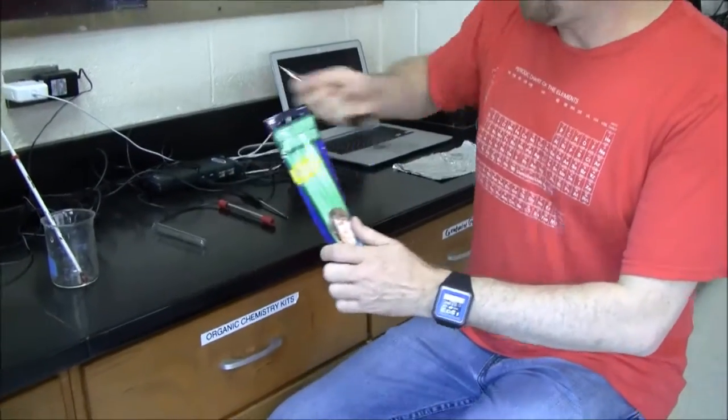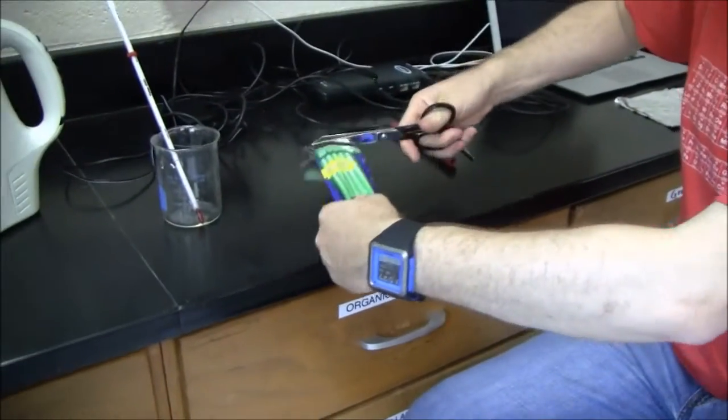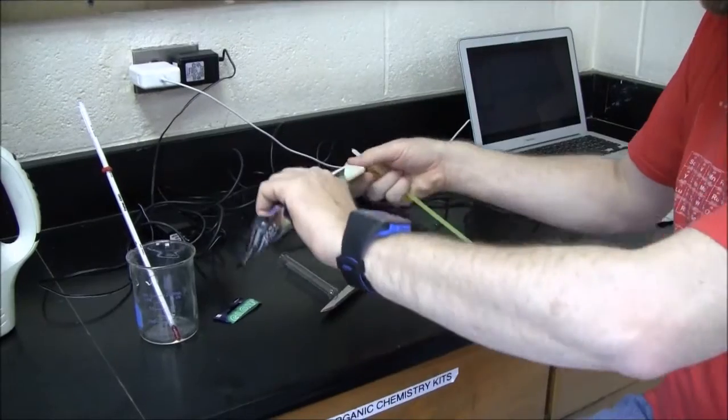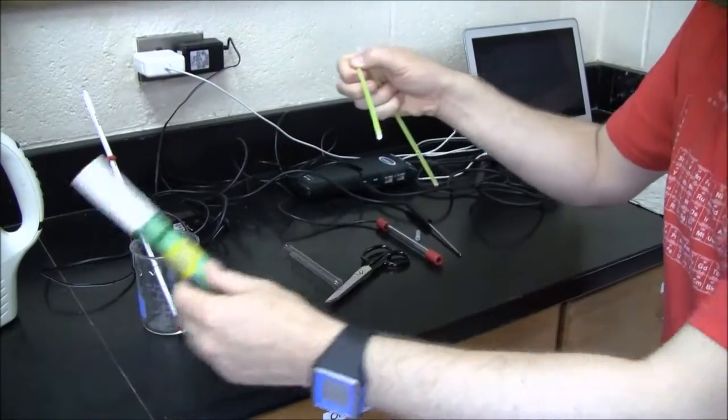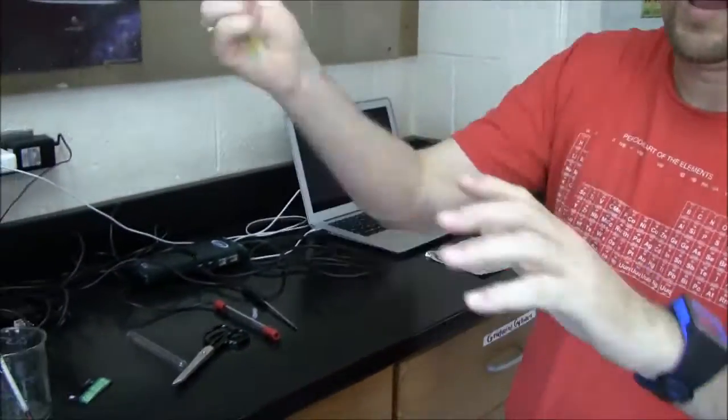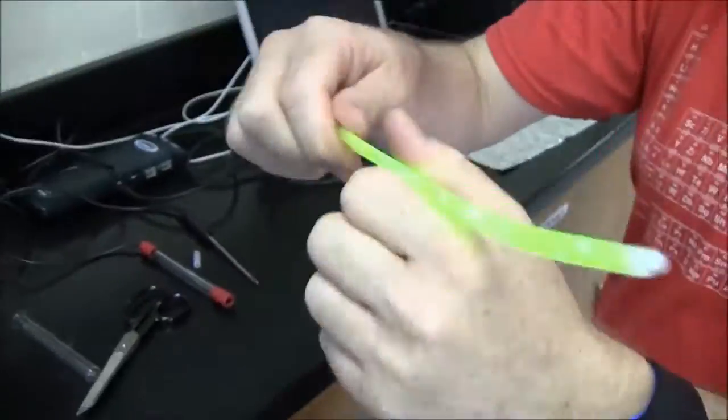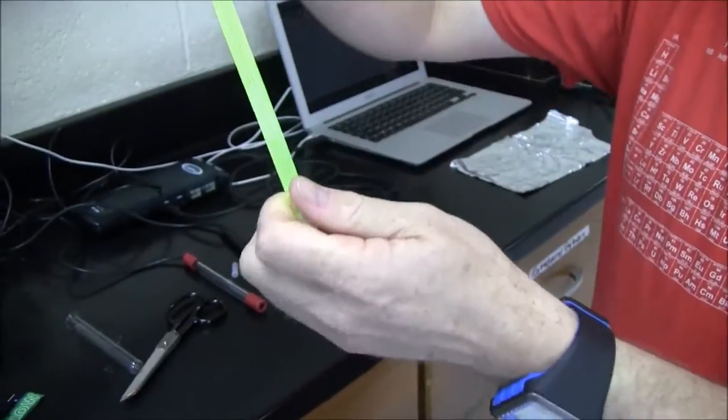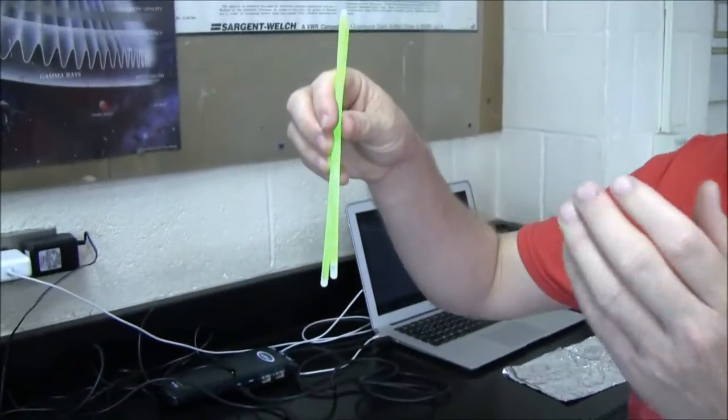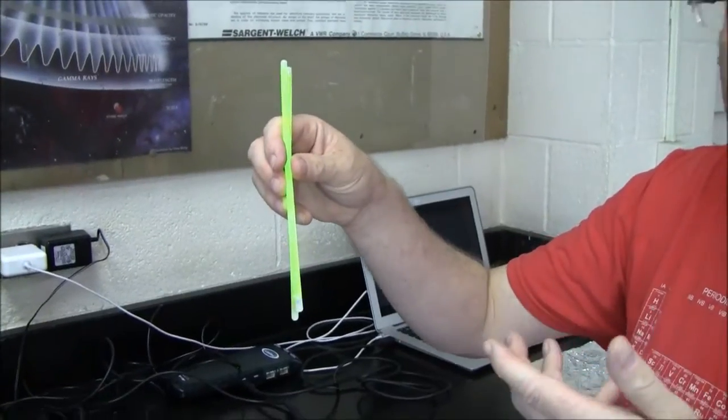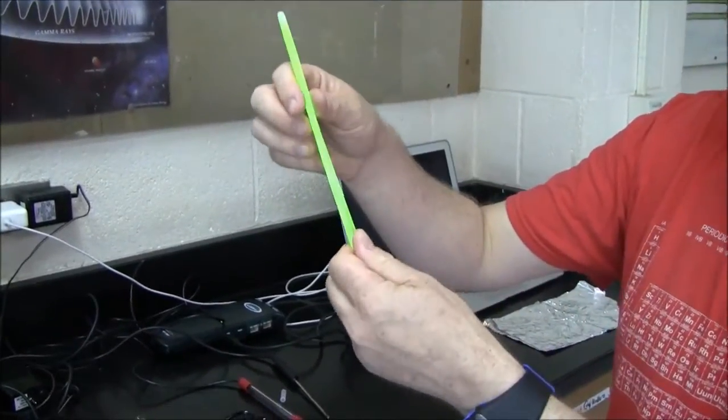Okay first of all open up the glow sticks. I'm probably going to need two to have enough fluid. There are two chemical reactions. We want the second one so the primary glow or the initial glow is going to take 10 minutes to fade then we're going to use the secondary glow.